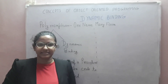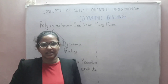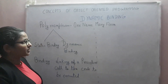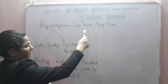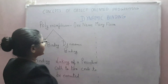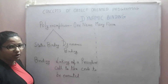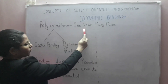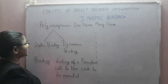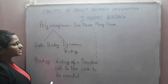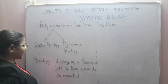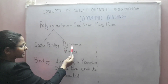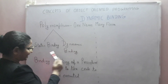Hey guys, let's see the concept of object-oriented programming: dynamic binding. As we know, polymorphism means one thing, many forms. Polymorphism is of two types: static binding and dynamic binding.